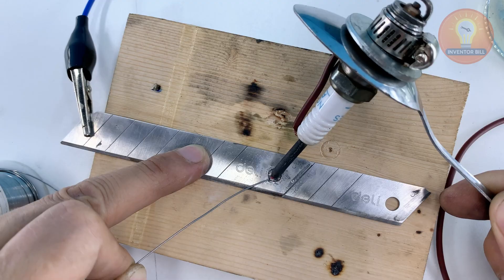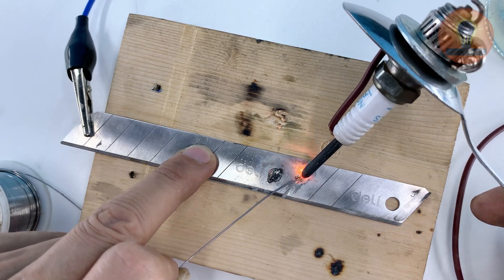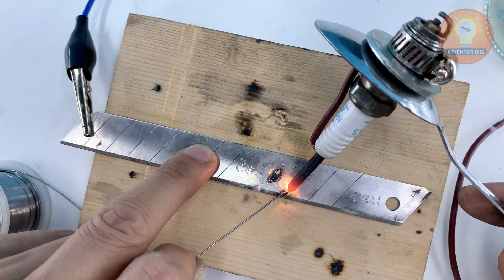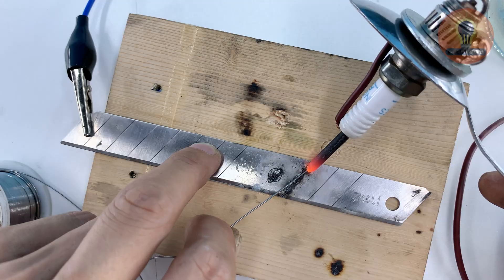When the carbon tip touches the metal, the arc heats the spot instantly. You'll see the steel soften and pull together as the edges fuse. I move slowly along the seam until the entire line is bonded.